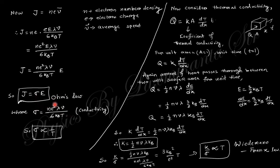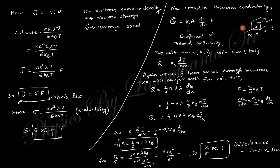The conductivity sigma is written here and is inversely proportional to T. Two further phenomena are also discussed. For thermal conductivity, consider heat transfer between two points: the amount of heat transferred is proportional to the cross-sectional area, the temperature difference, and the time. The proportional constant K is the coefficient of thermal conductivity. Considering unit area and unit time, q equals K times dT.